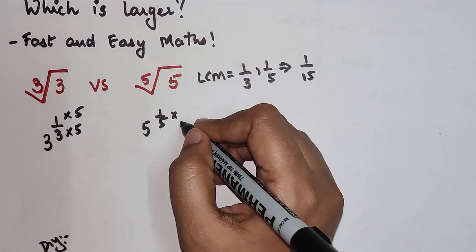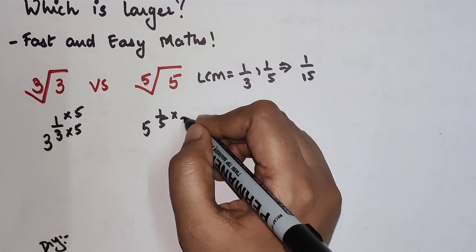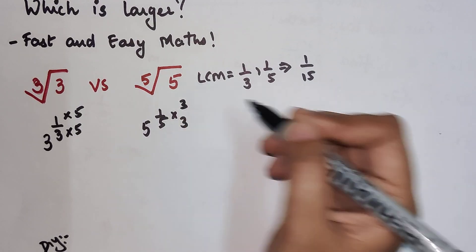Here also, since I want to make the 5 as 15, I am going to multiply this by 3 and this by 3.